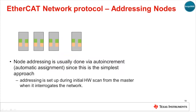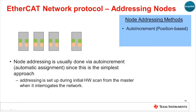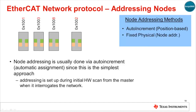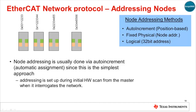The individual addresses of each slave node can be in any order specified by the master, and there are a number of methods of assigning addresses. Namely, AutoIncrement — a position-based method where nodes are assigned an address starting from zero and decrementing for each location in the chain — is the simplest and can be set up automatically by the master on the initial network configuration scan. Other methods include fixed physical addressing, also called node addressing, which is assigned during configuration scan and whose addresses can be independent of physical location in the network. Finally, there is logical addressing, which provides a 32-bit address rather than the 16-bit address of the other modes. Note that the 64K limit on node count in a network still applies.